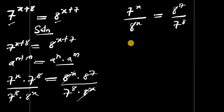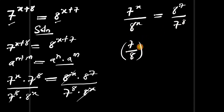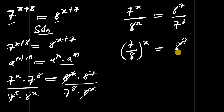Now this can be written as 7 divided by 8, all to the power x, is equal to 8 power 7 divided by 7 power 8.